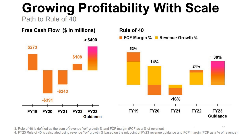Now look what happens in fiscal year 2020. On the left chart, they lost $391 million in free cash flow. So on the right chart, the dark orange is now below the yellow — it's negative, subtracting from revenue growth. When you sum those two together, you get just 14%. The next year was rough: not only did they have negative free cash flow, they also had very low revenue growth — summing to a negative number. Then you can see improvement moving right. Their fiscal year 2023 guidance was 38%, but they actually hit around 30%.